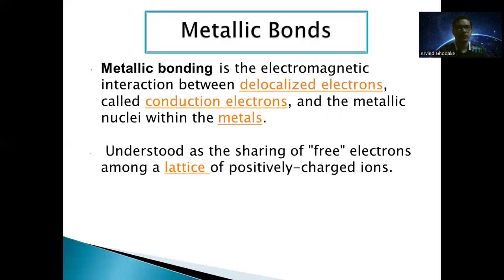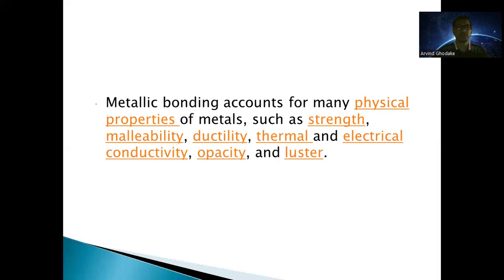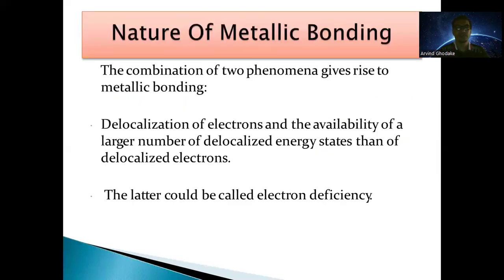Metallic bonding is the electromagnetic interaction between delocalized electrons, called conduction electrons, and the metallic nuclei within the metal. It can be understood as the sharing of free electrons among a lattice of positively charged ions. Metallic bonding accounts for many physical properties of metals such as strength, malleability, ductility, thermal and electrical conductivity, opacity, and luster. Metallic bonding arises from two phenomena: delocalization of electrons, and the availability of a larger number of delocalized energy states than localized electrons — the latter is called electron deficiency.